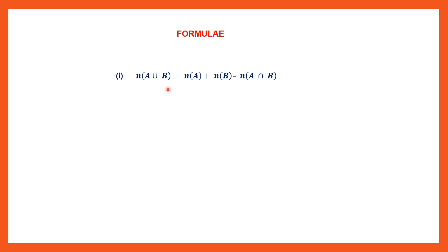This is one formula — there are some formulae that you need to learn. If you are asked to find the cardinal number of A union B and you are given only the cardinal numbers — that is, cardinal number of set A, cardinal number of set B, and the cardinal number of A intersection B — and you are not given the elements, then this is the formula you need to use to find the cardinal number of A union B.